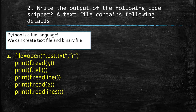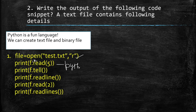Write the output of the following code snippet. A text file contains: 'Python is a fun language. We can create text file and binary file.' The code opens test.txt in read mode, then prints f.read(5). Since read(5) reads 5 characters — P, Y, T, H, O — the output is 'Pytho'.